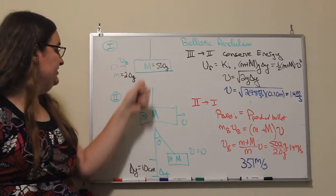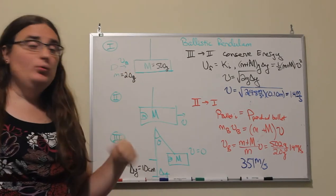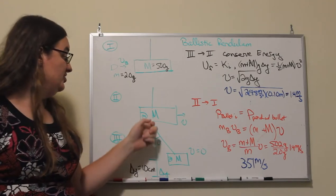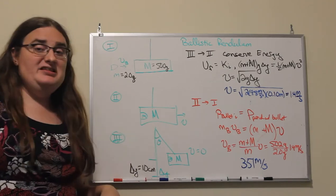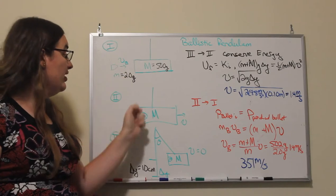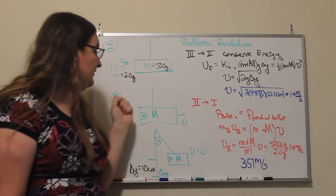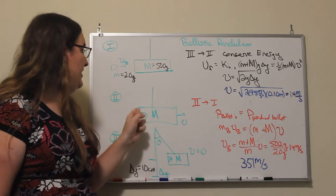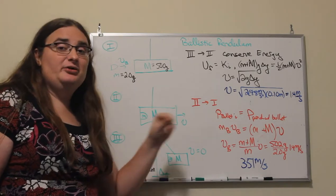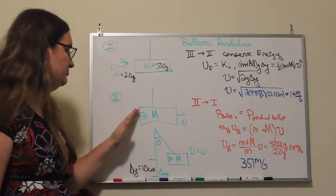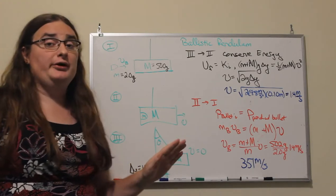So when that projectile collides with the pendulum mass and embeds itself, we undergo a completely inelastic collision, and then that momentum from that projectile is transferred to the pendulum which is then going to start swinging back and forth.